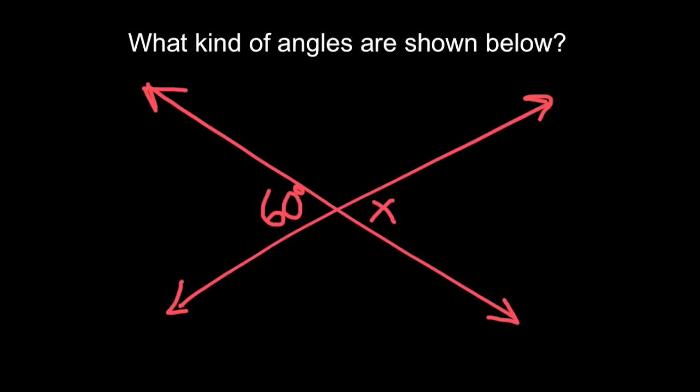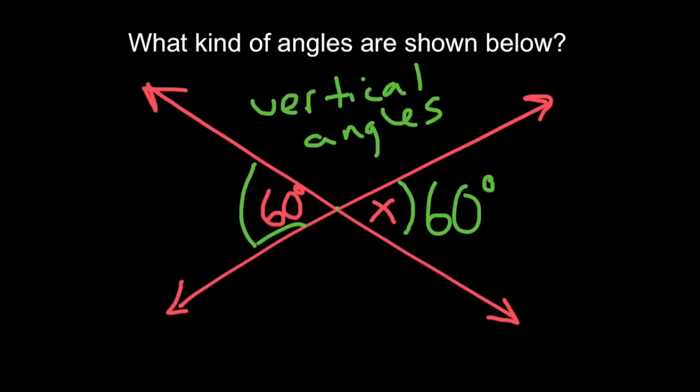Alright, so what kind of angles are shown below? Well, these two angles—they're not right next to each other, they're actually across from each other. They're vertical angles. And because they're vertical, we can automatically know that if this one's 60 degrees, then its vertical angle across from it is also 60 degrees.